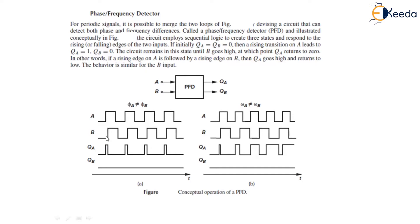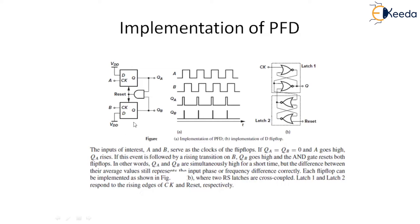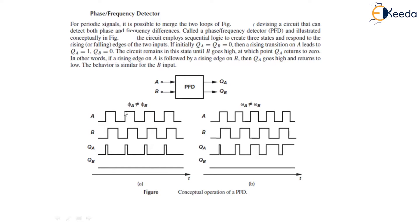You can see over here, the circuit remains in this state until B goes high, at which QA returns to 0. In other words, if a rising edge on A is followed by a rising edge on B, then QA goes high and returns to low. This behavior is similar for the B input. Now, the two inputs have equal frequency. But A leads B. The output QA continues to produce pulses whose width is proportional to phi A minus phi B, while QB remains at 0.